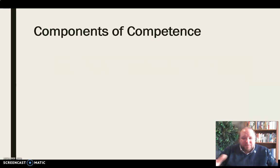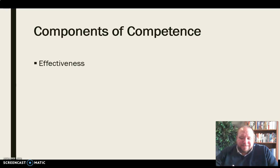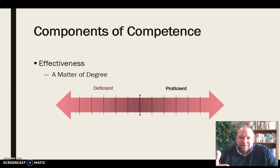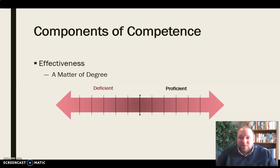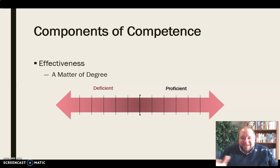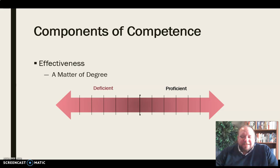Let's break those things down. The components of competence involve, first of all, being able to communicate with effectiveness. Effectiveness comes in degrees — it's not a matter of you're either effective or not effective. Sometimes we're extremely effective; other times we're in the middle, somewhat effective but not entirely. Or we fumble the whole thing and are completely deficient. We can fall anywhere on that continuum. Effectiveness is a matter of degrees, not a binary situation.